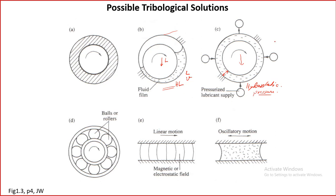One key advantage is that fluid film bearings have very high stiffness, which is not possible in rolling element bearings, and along with that they have very good damping properties. In fact, for very high speed applications, these fluid film bearings are used.